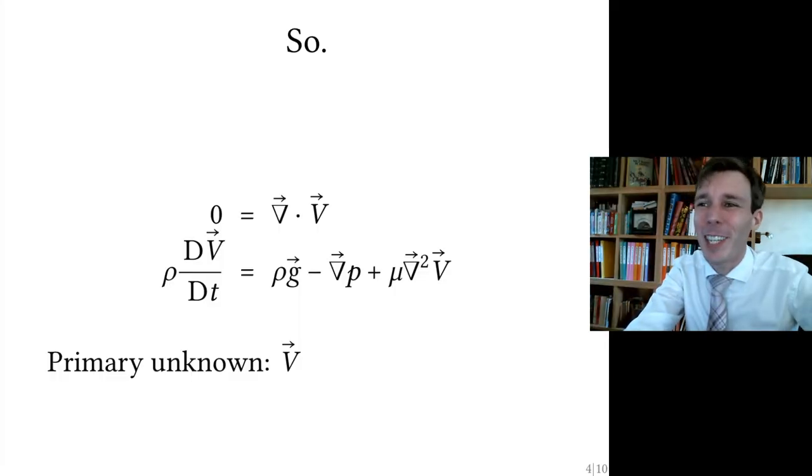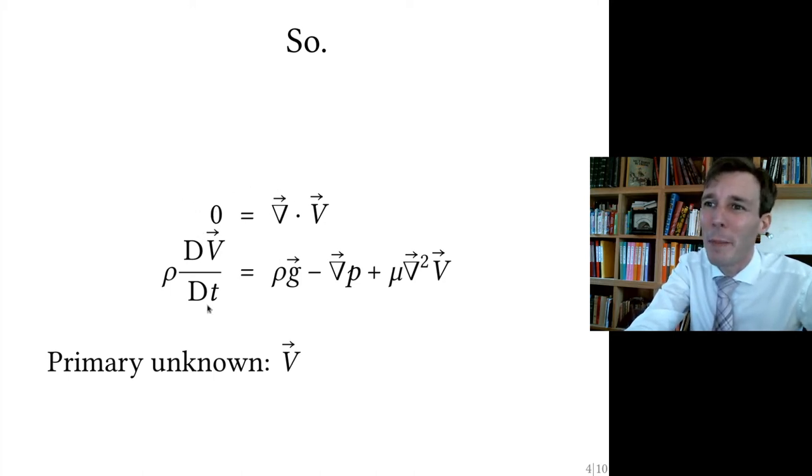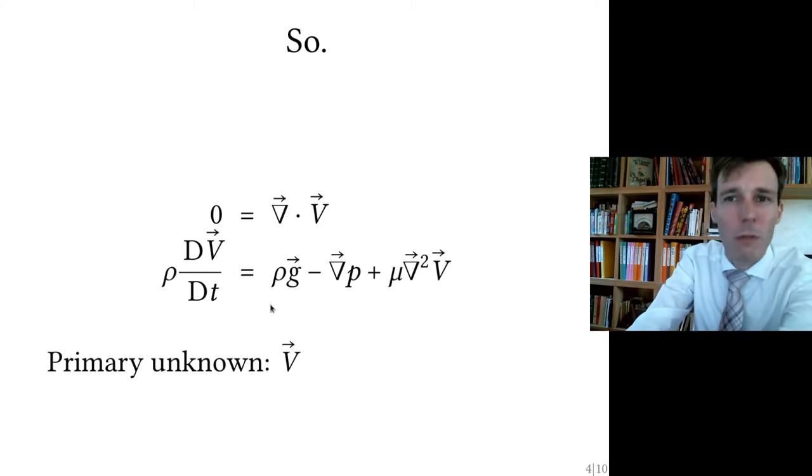We said we have two equations to solve. We have the divergence of velocity is zero, which is the mass conservation equation, and then we have the momentum balance equation, the Navier-Stokes equation. This has three components. The unknown in all this is the velocity field—we want to know how the fluid flows around a given problem.